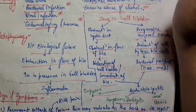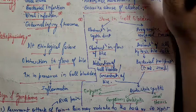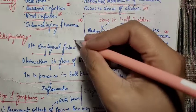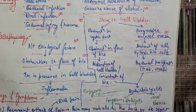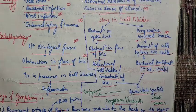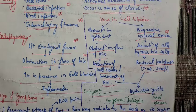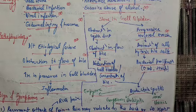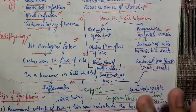Now, what is the pathophysiology of chronic cholecystitis? Due to etiological factors — such as obstruction in the flow of bile, bacterial infection, viral infection, external injury, trauma, or gallstones (which are the most common cause) — there is obstruction in the bile flow, leading to increasing pressure and inflammation. This is the basic pathophysiology.